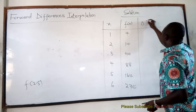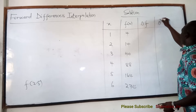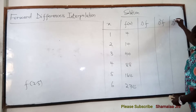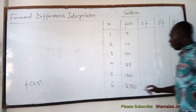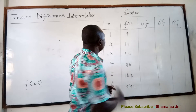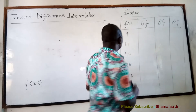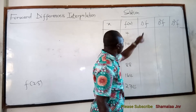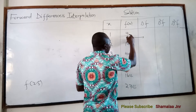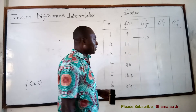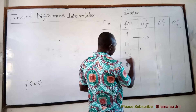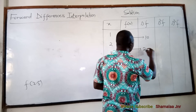We set up columns for delta F, delta squared F, and delta cubed F. For the first forward differences: we subtract each value from the next. So we get 14 minus 4 equals 10. Then 40 minus 14 equals 26. Then 88 minus 40 equals 48.